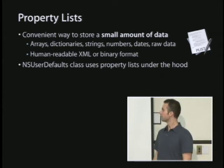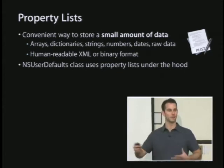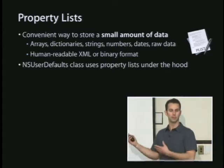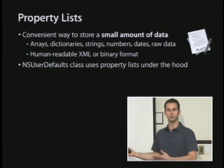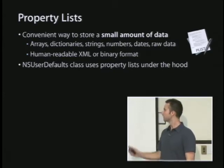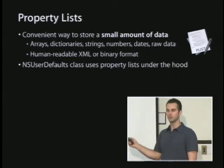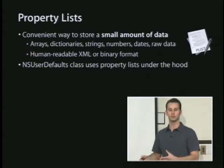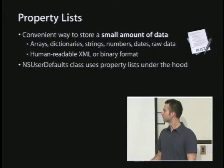Property lists can be stored in two formats: either XML, which is human-readable and more verbose, or an internal proprietary binary format, which is a bit faster and smaller. The NSUserDefaults class is layered on top of this, giving you an easy abstraction to use defaults in a simple way.